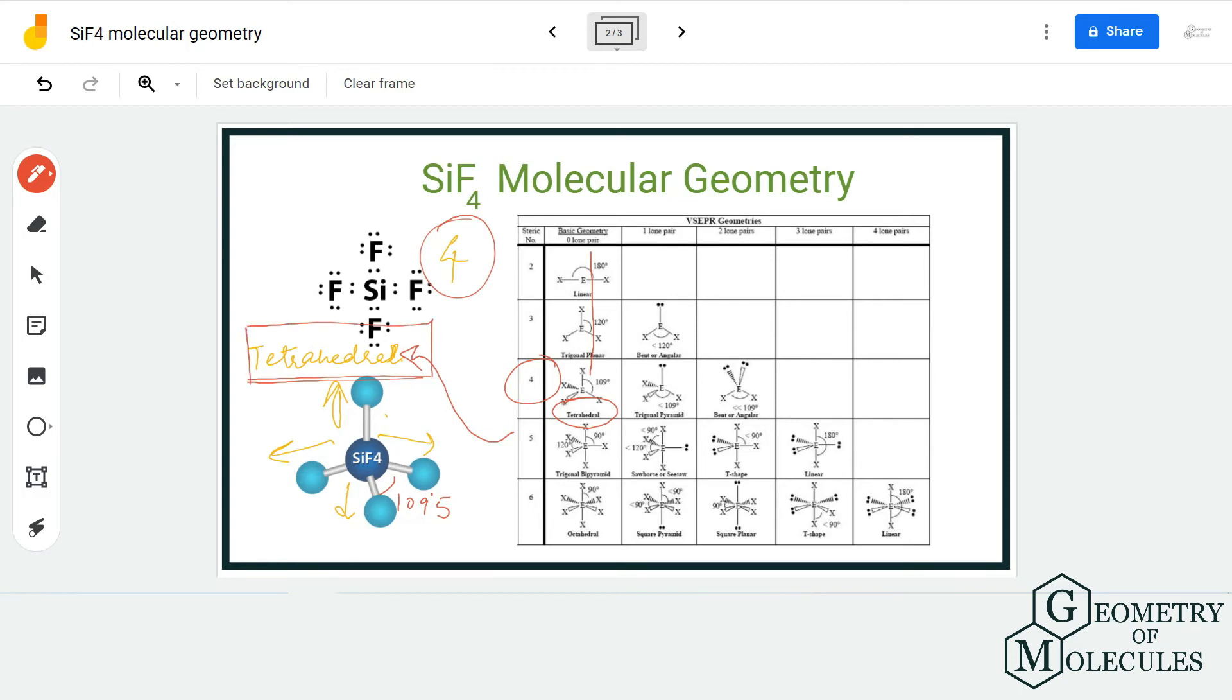You can also find out the AXN notation for this molecule. The AXN notation would be AX4 because there is no lone pair. The notation would be AX4, and if you check that table out, you will get to know that even the molecules that have AX4 notation have tetrahedral molecular geometry. So I hope this video